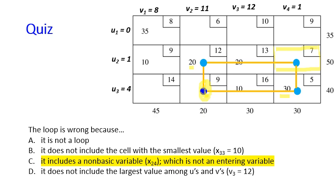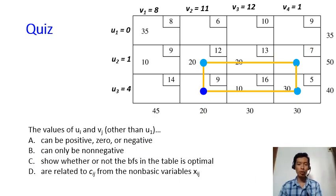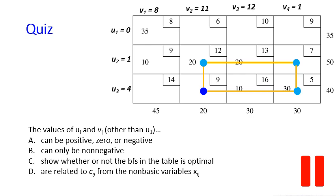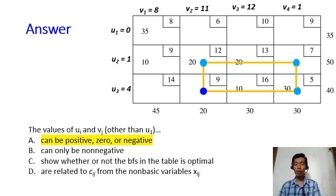The last question: the values of ui and vj, other than u1 itself which is always equal to zero, pick one of the statements here that you think is correct. The correct answer is they can be positive, zero, or negative. We have not seen any u or v that is negative, but it is possible. So that's the end for this week. Thank you for watching all the videos for this week and see you again next week. Thank you.